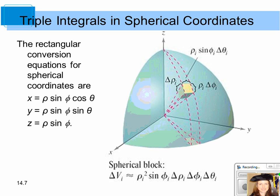The way you determine the volume of a spherical block is found by taking rho squared times the sine of the angle phi times the change in rho, change in phi, and the change in theta. So that's going to be used as our differential volume when we set up a triple integral using spherical coordinates.